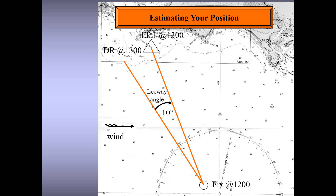In this case, let's assume the leeway angle is about 10 degrees, which makes the vessel do a course of about 40 degrees and brings it to an estimated position shown by the triangle at 1300 hours. This would be the position of the ship if only the wind was acting. Now if there was an additional current acting on it — the current is shown as three arrows in the direction it is flowing — the estimated position of the vessel would not be at EP1 but rather at EP2.